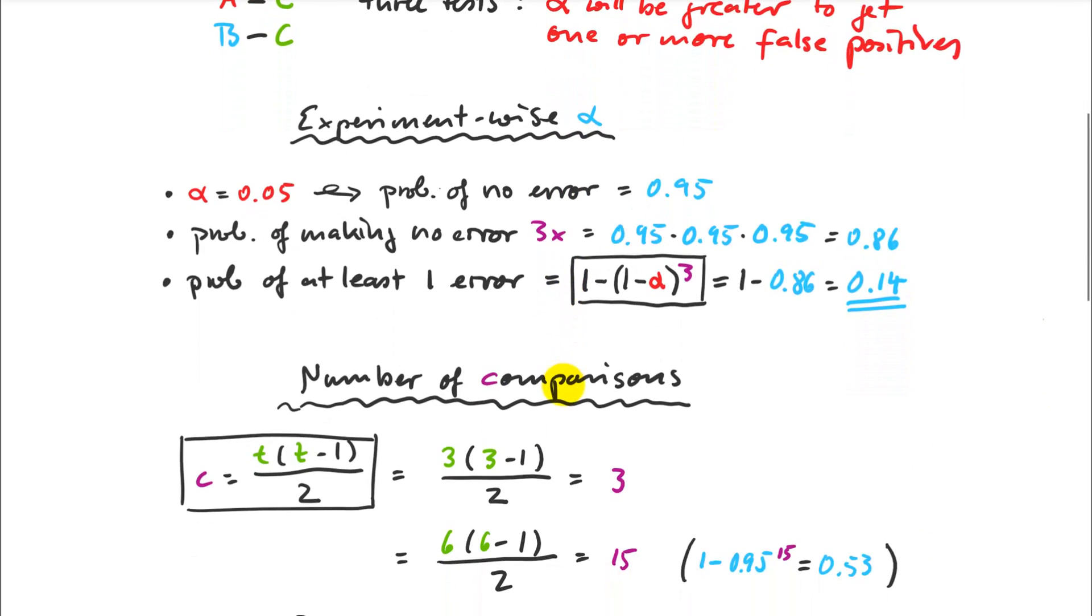What happens if I have more than three treatment levels? There's a formula to get the number of pairwise comparisons you actually have to carry out. That's a combinatorics formula. It's the number of treatment levels times the number of treatment levels minus 1 divided by 2. If I plug in three treatment levels, I get 3 times 2 is 6 divided by 2 is 3, and that's what we had up here.